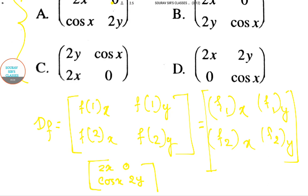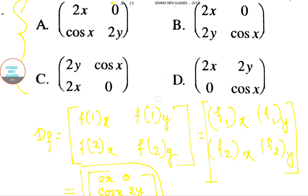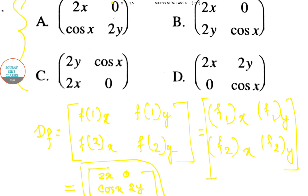The answer is [2x, 0; cos x, 2y]. Let's see which option matches this answer. This matches option A, so the answer is option A. Thank you for watching this video.